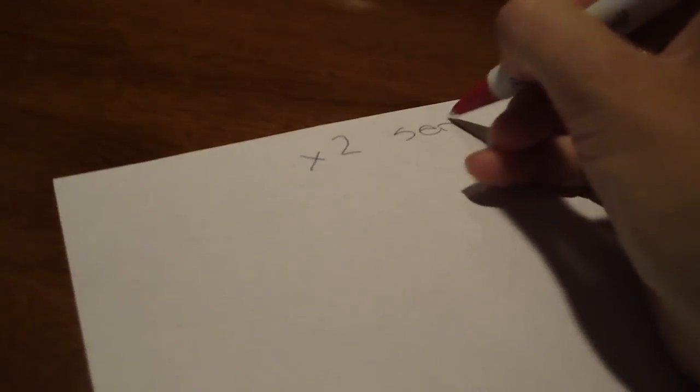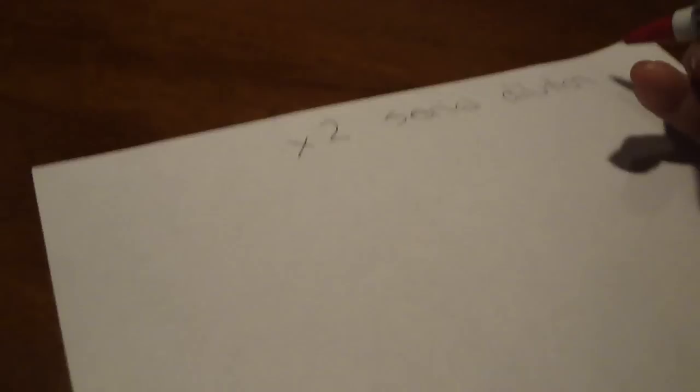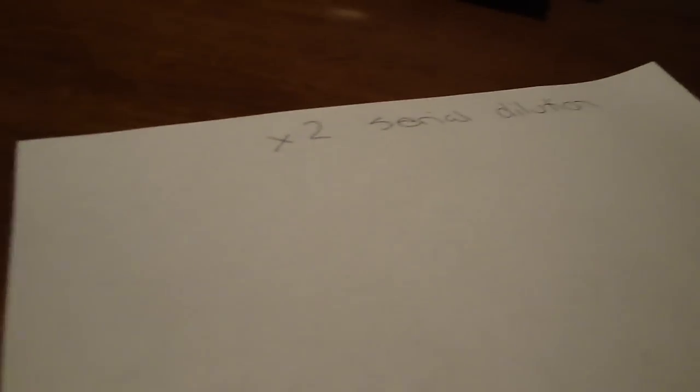So we will start with a times two serial dilution. It's very important that when you're doing dilutions on a test, go ahead and make up your tubes on the paper. It makes it so much simpler. You don't want to get too caught up in what your final dilution is. Do one step at a time.